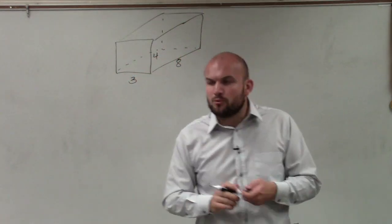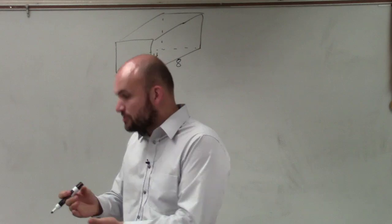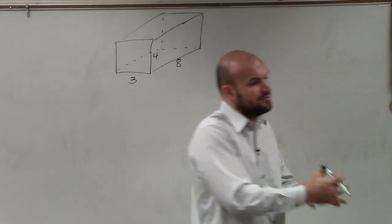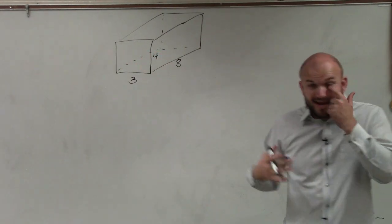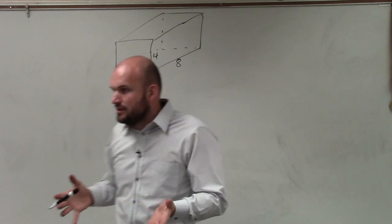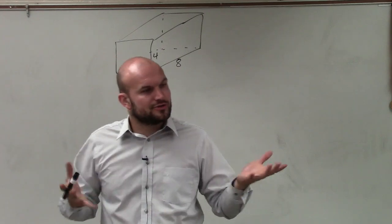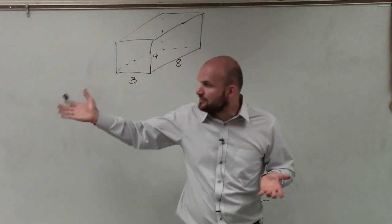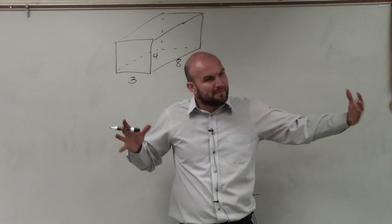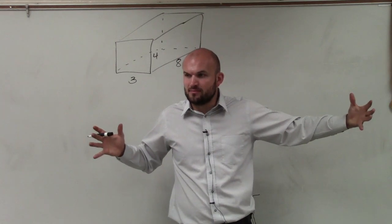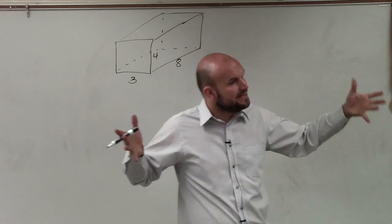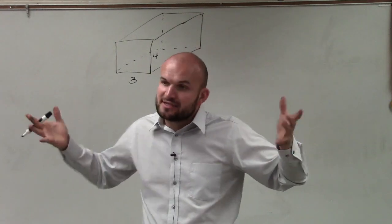And what we talked about was being able to determine which the sides are which. The base, the top, the left side, the right side, the front, and the back. And it doesn't really matter how you want to label them. But what I wanted you guys to understand from our examples that we did was that opposite ends of a rectangle prism have exactly the same dimensions and exactly the same area.